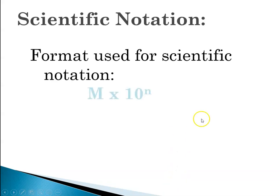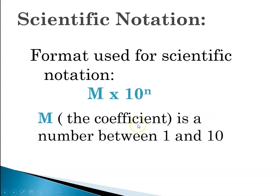And m is called the coefficient and it's a number between 1 and 10, meaning we can only have one digit to the left of the decimal point, and n is an integer.